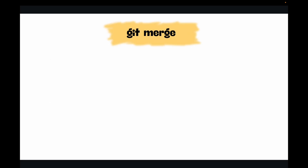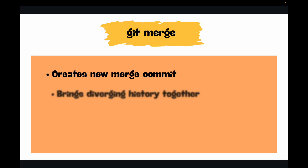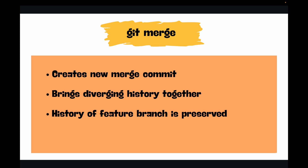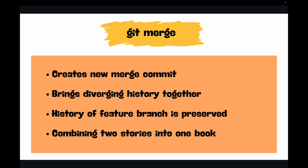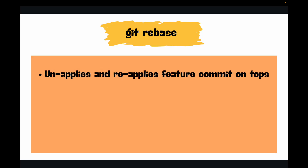To understand rebase, let's compare it directly to merge. Git merge creates a new merge commit that brings two diverging histories together. So if you make some changes in the feature branch and some changes in the main branch and merge them, it creates a new merge commit. The history of the feature branch is preserved, but the commit graph can look messy with multiple merge bubbles — like combining two separate stories into one book with a note saying these two stories are now together.